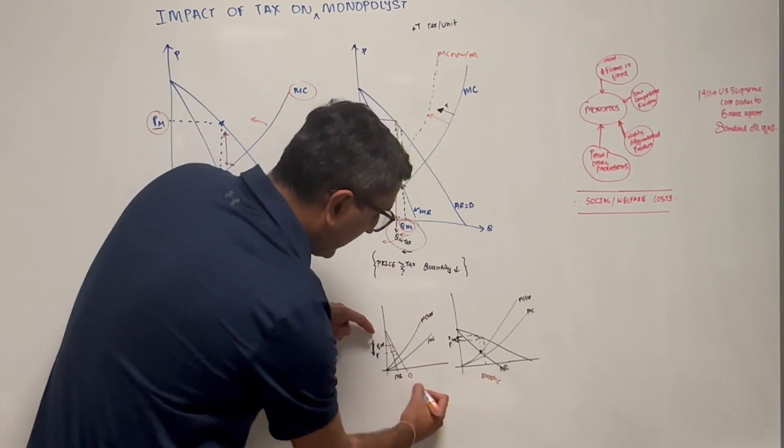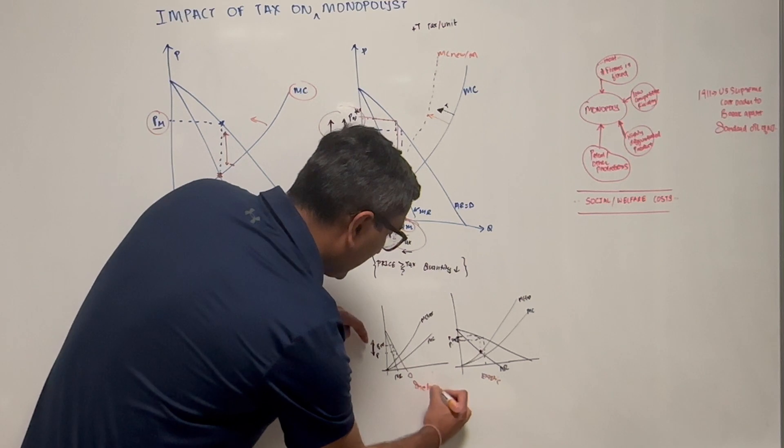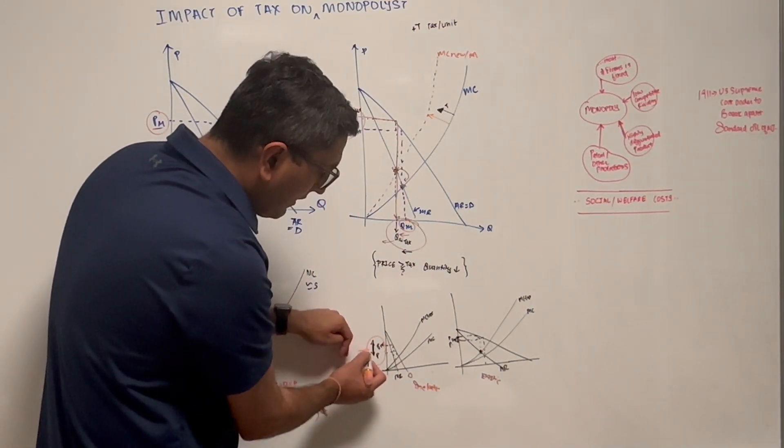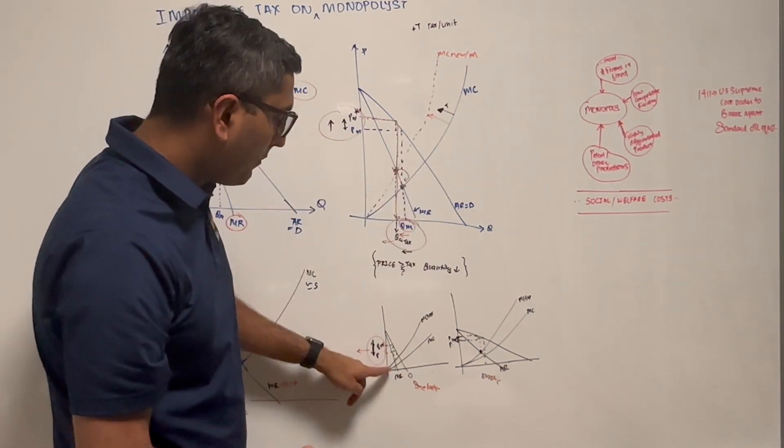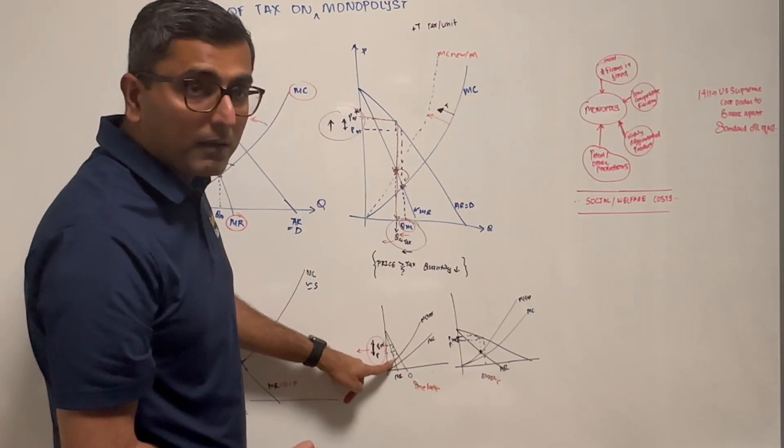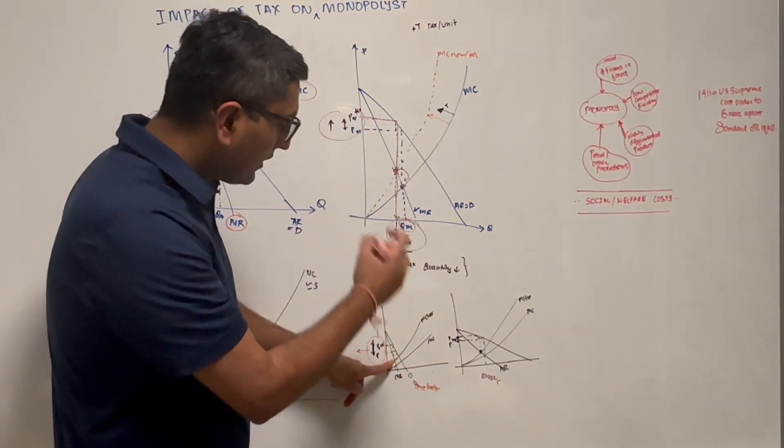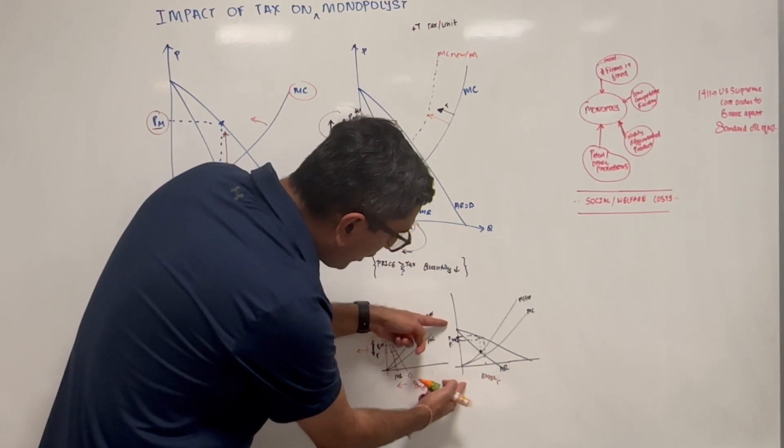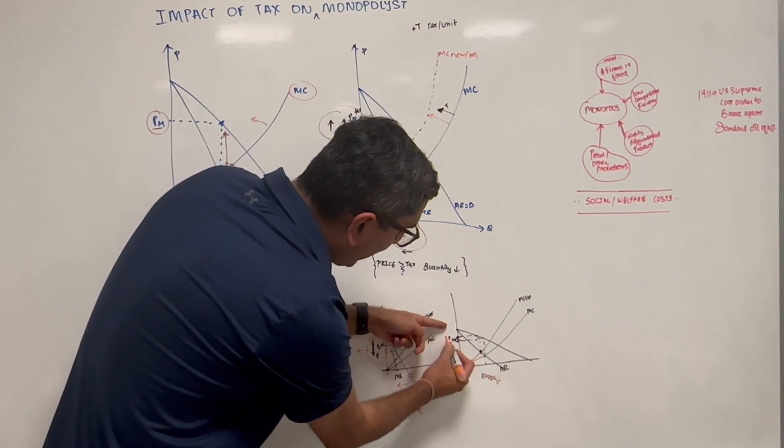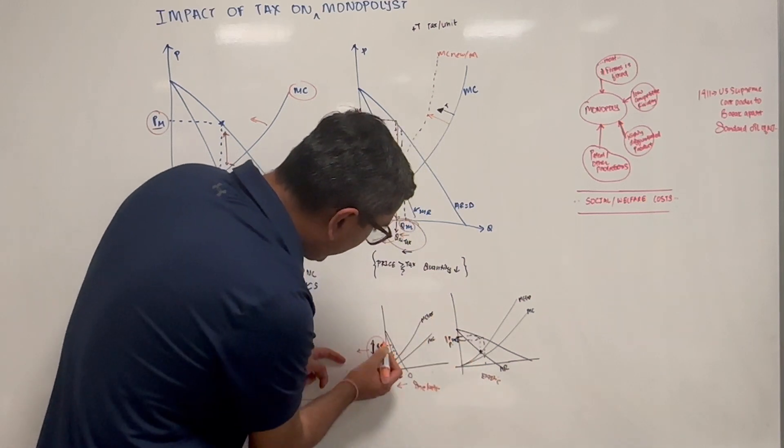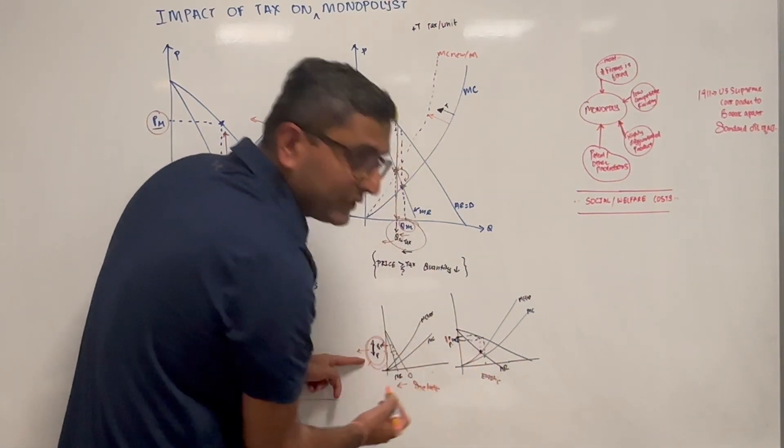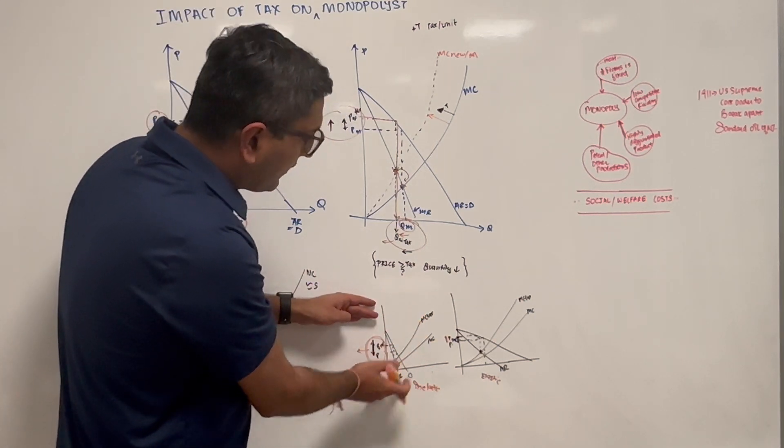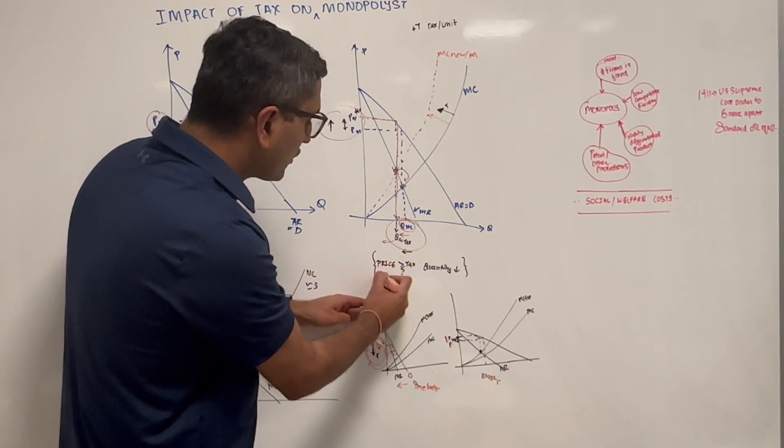If you see in an inelastic curve, the price change is much higher and could be even higher than the tax introduced, because the monopolist has the ability to shift the price up. When the price goes up, the quantity also reduces. In this situation with higher elasticity, the impact on price is much lower and the quantity changes appropriately. So quantity and price changes completely depend on the elasticity of demand.